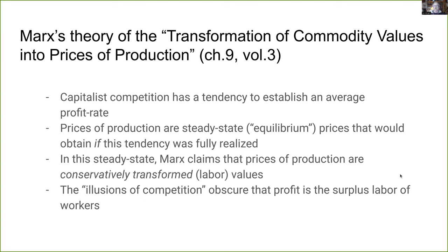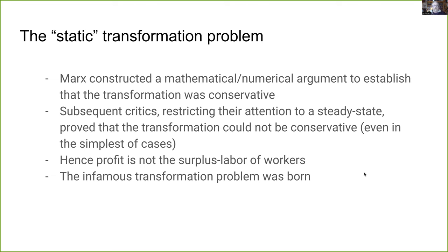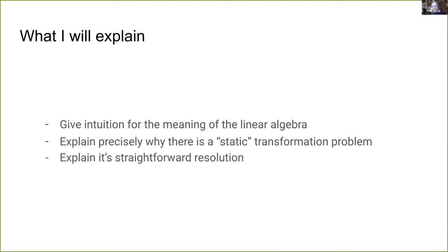The illusions of competition obscure the fact that profit is the surplus labor of workers — that's his transformation theory. Marx constructed a mathematical argument with numerical examples to establish that the transformation was in fact conservative, but some subsequent critics, restricting their attention to this steady state, proved that Marx's transformation could not be conservative even in the simplest of cases where the labor theory of value should shine. So profit, according to the critics, is not the surplus labor of workers, and the infamous transformation problem was born.